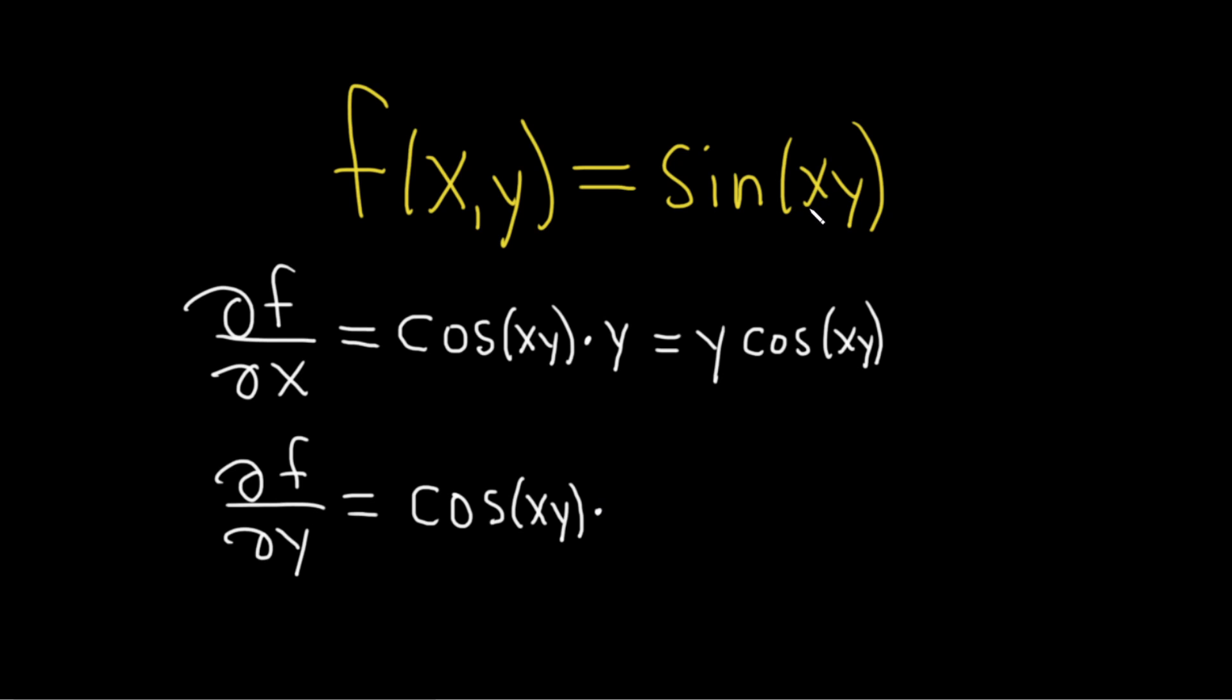This time x is a constant, so the derivative of y is 1, and so we're left with x. This is x cosine of xy.